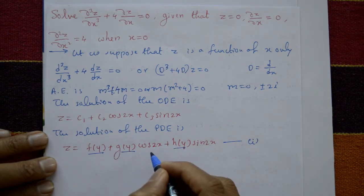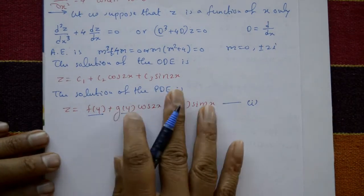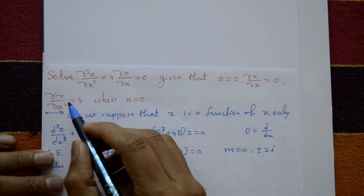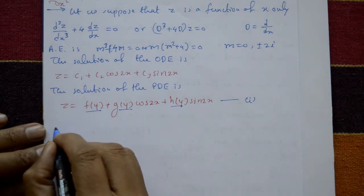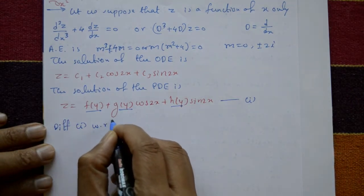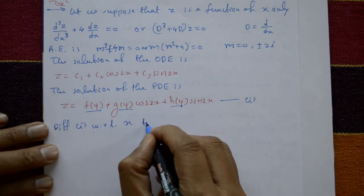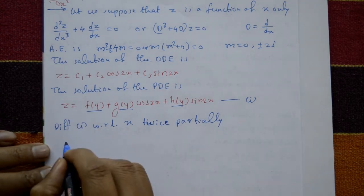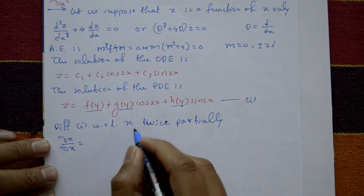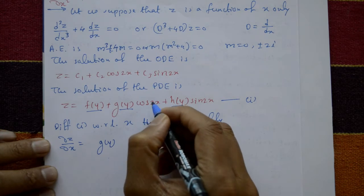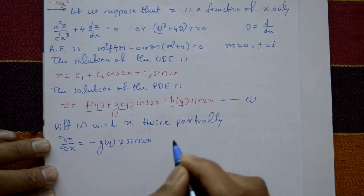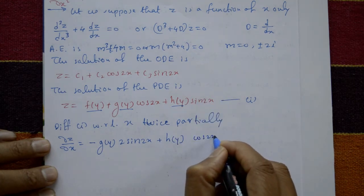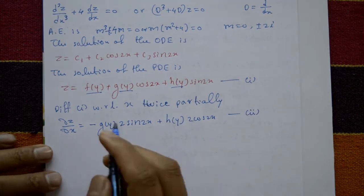Since we have conditions involving dz/dx and d²z/dx², differentiate equation 1 with respect to x. Differentiating once: dz/dx = −2g(y)sin(2x) + 2h(y)cos(2x). Call this equation number 2.